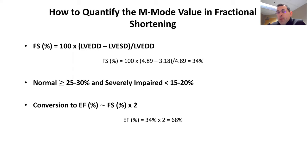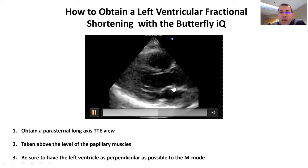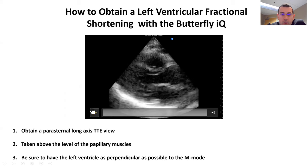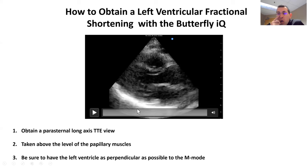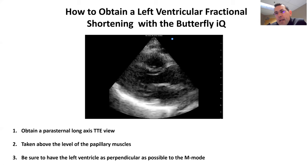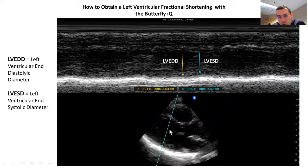Another way to do it is to take a parasternal long axis view. Here, instead of getting the donut view and putting the M-mode line straight down, we put it on a slight angle through the left ventricle above the papillary muscles. That angle introduces a small angle error, which is one reason we tend to prefer the short axis approach. However, if you remember that these are all approximations, that's an acceptable small error to have.